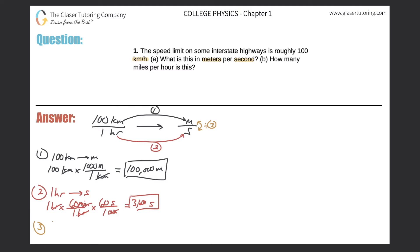Step three involves doing the division. The 100,000 meters from part one will be divided by the 3600 seconds. Let's get out the calculator: 100,000 divided by 3600 works out to approximately 27.8 meters per second. That should be the answer to part A.